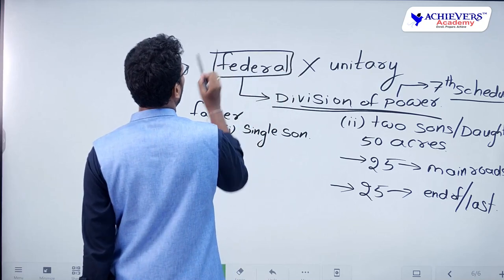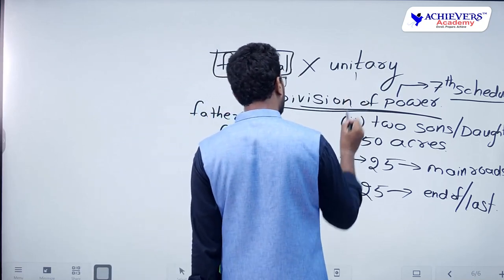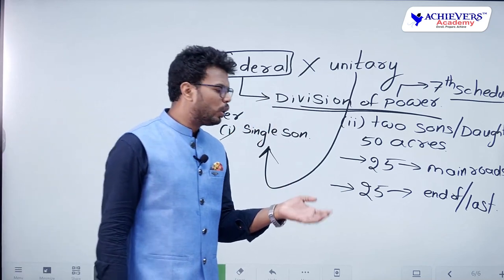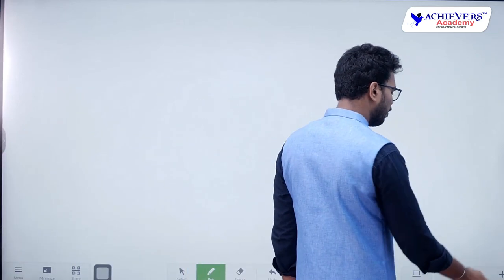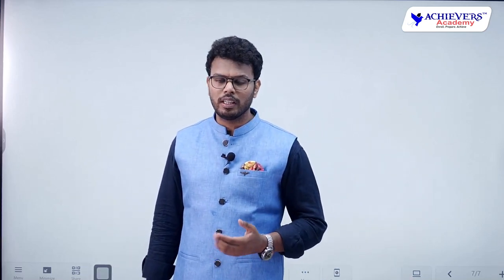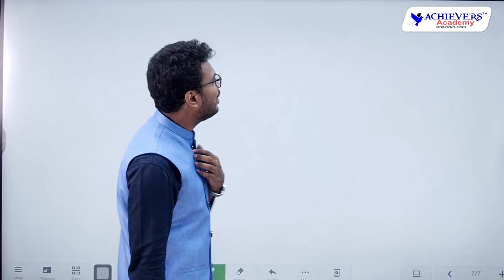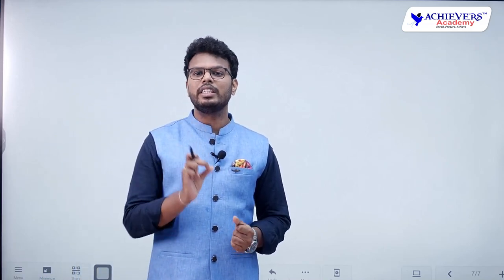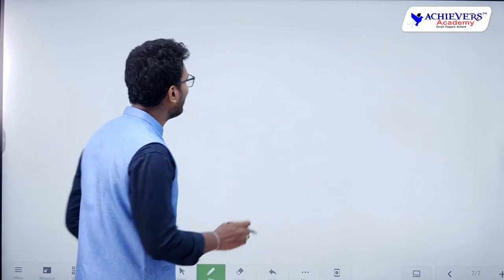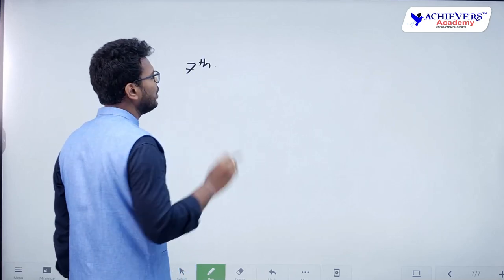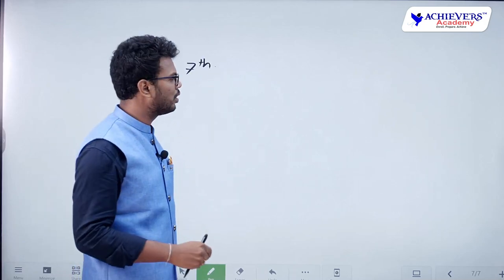In a unitary state — like the single son — there is no need to mention division of powers because there is only one government. That is the meaning of federal structure: federal means there will definitely be a division of powers. In India, as stated, the Seventh Schedule provides a clear-cut division of powers. The Seventh Schedule consists of three lists: the Union List, the State List, and the Concurrent List.